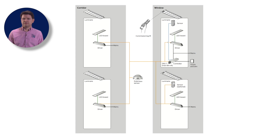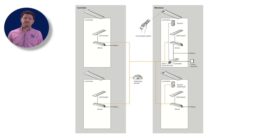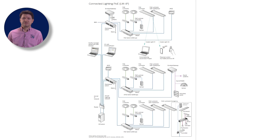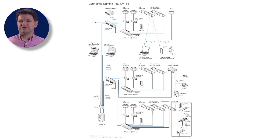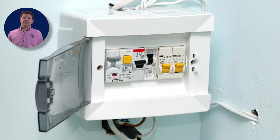Thirdly, there is the control system itself — this is the brains of the system. The components are often known as lighting control modules, LCMs, or lighting control panels, LCPs. These can be programmed and are often linked to the building management system. You will often find the panel in a cupboard or basement control room.